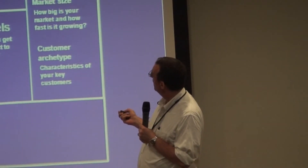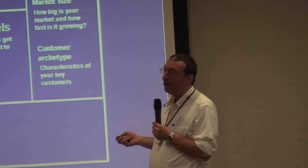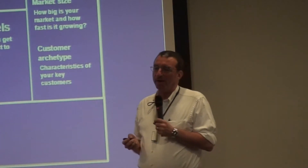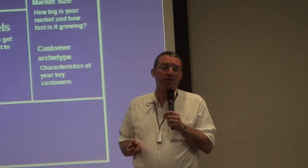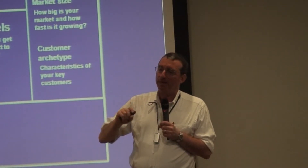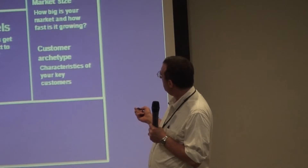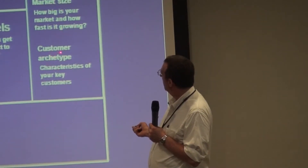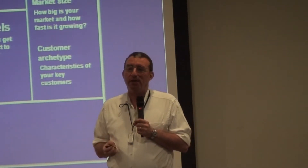Then we talk about our sustainable competitive advantage — we went through this in the previous slide. Then channels: how do we get the product to customers? This is something we'll go into in more detail later. It's often neglected by entrepreneurs, especially high-tech and research entrepreneurs — they don't think enough about how to get the product to customers. Then customer segments: who are the target customers, how big is our market, how fast is it growing, and customer archetype — the characteristics of our key customers.